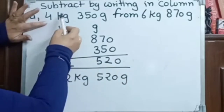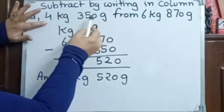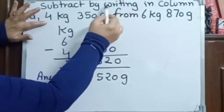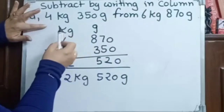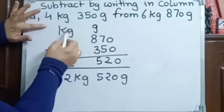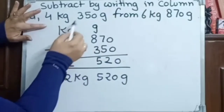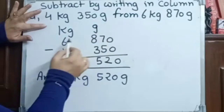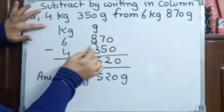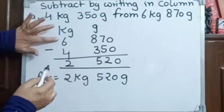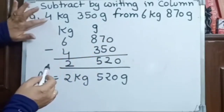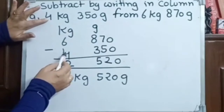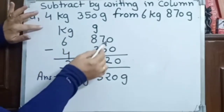This is how we subtract any weights by writing in columns. First we have to write the units — kilogram and gram. Then we will see which one is the bigger number. The bigger number will be on the upper side and the smaller number will be on the lower side. Then we subtract it.